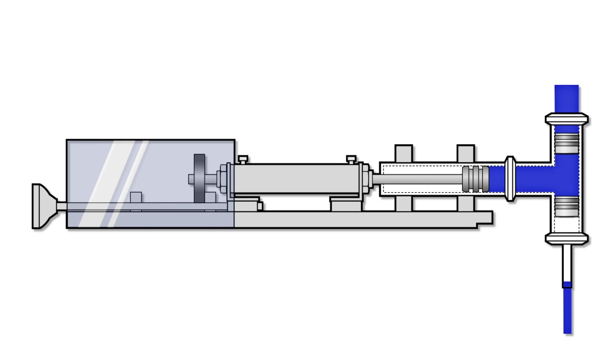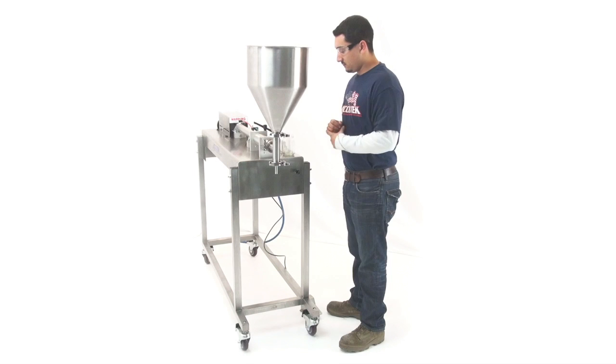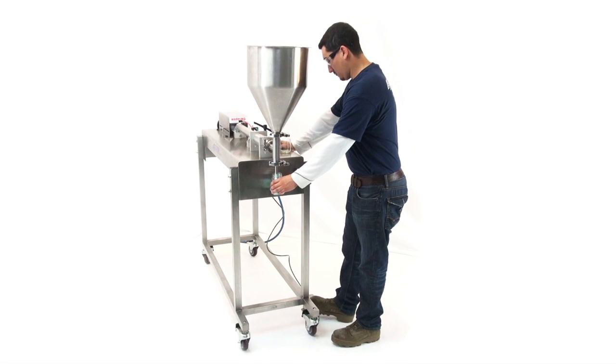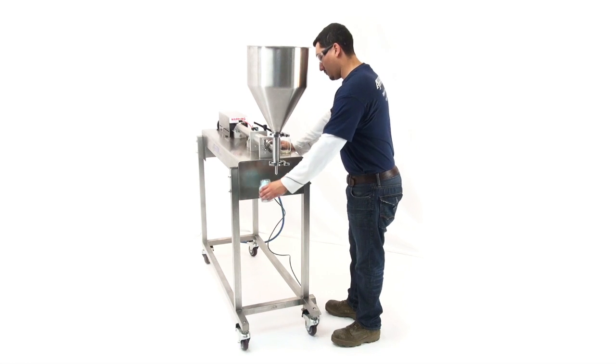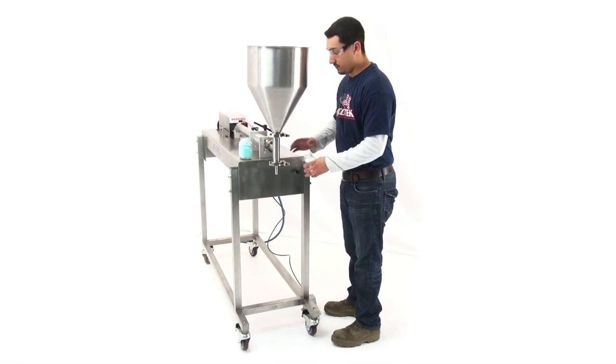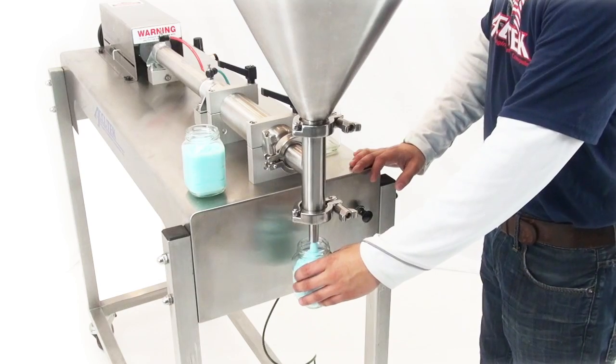A smaller cylinder or smaller stroke will result in a smaller fill cycle. The simplicity of the piston filling process allows Accutek piston fillers to adapt to a wide variety of products while continuing to deliver extremely accurate repeatable dose fills.